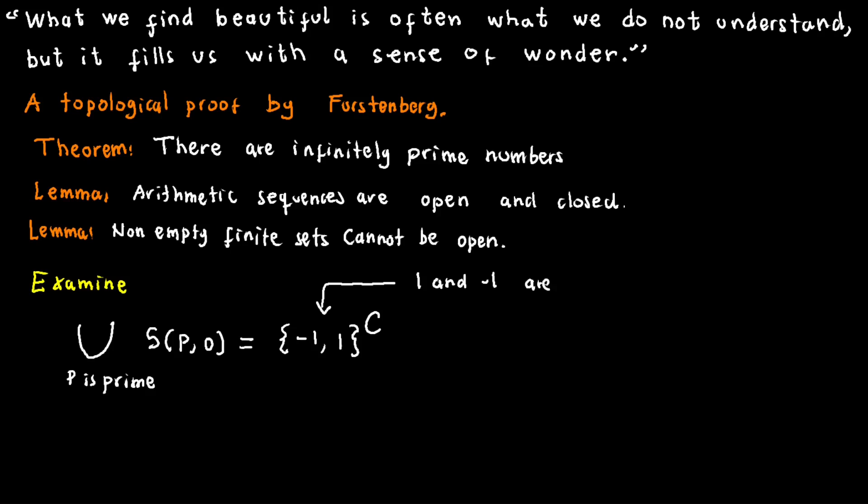It's crucial to note that this union includes all integers except for 1 and negative 1. The exclusion of these two numbers is warranted by the fact that every integer, excluding 1 and negative 1, possesses a prime factor. As per the definition, this union is deemed open. Now, ponder this.